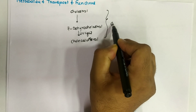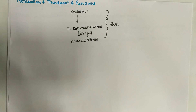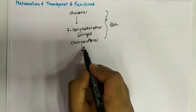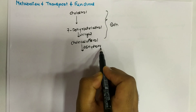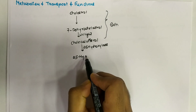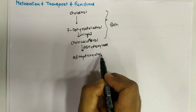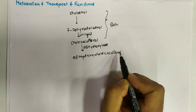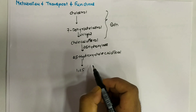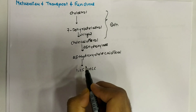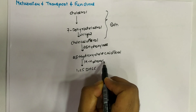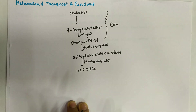Cholecalciferol goes into the liver, where the enzyme 25-hydroxylase converts it to 25-hydroxycholecalciferol. The 25-hydroxycholecalciferol then travels to the kidney, where it is converted into 1,25-dihydroxycholecalciferol — calcitriol, the active form of vitamin D — by the enzyme 1-alpha-hydroxylase.